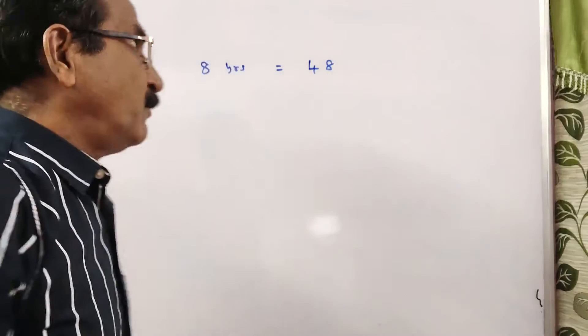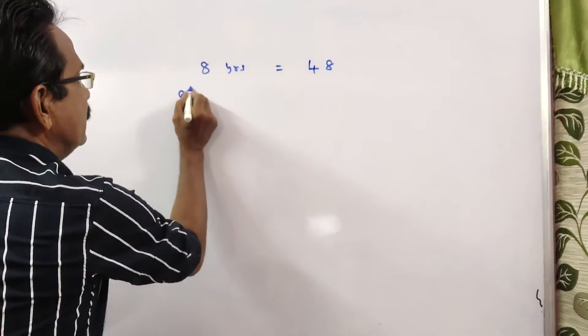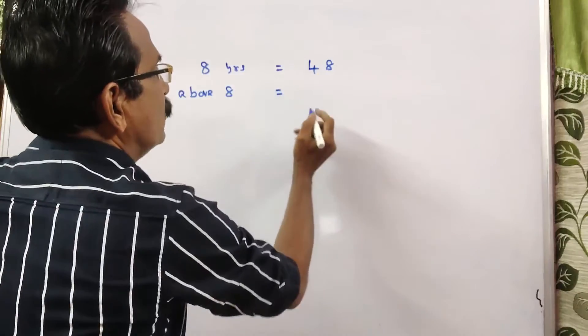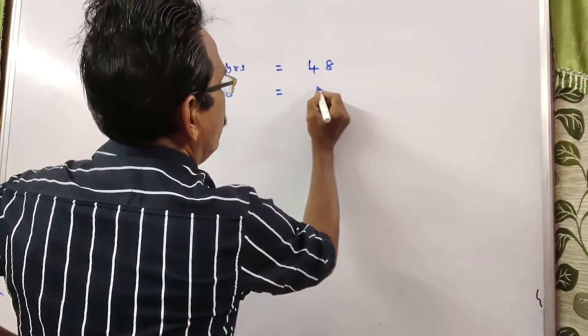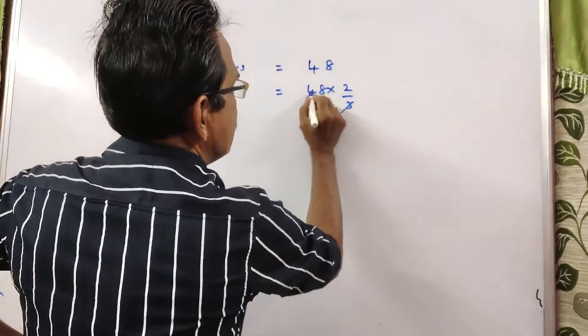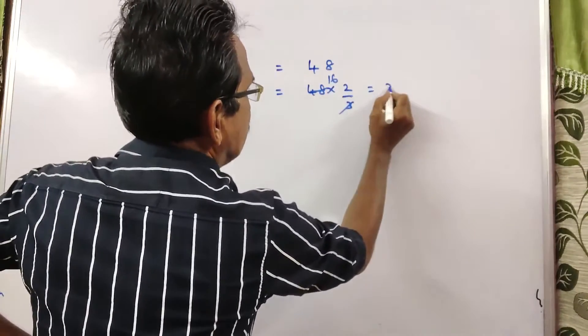Next, students above 80 years. Above 80 is equal to 2/3 of this: 2/3 of 48 into 2/3. 3 into 16, 16 times 2 is 32.